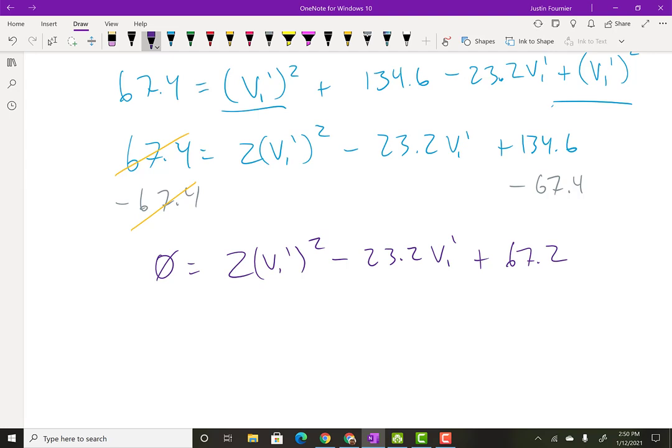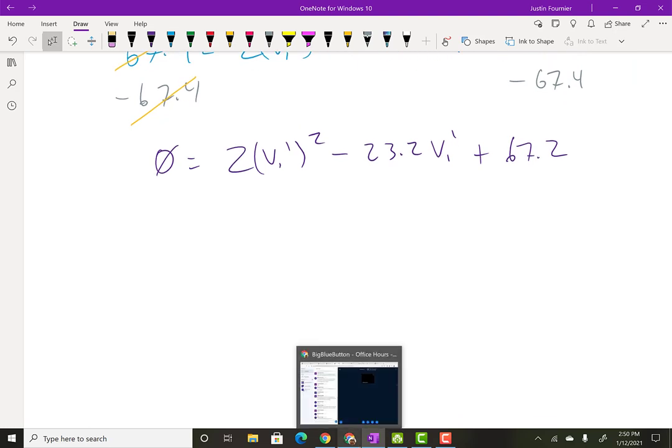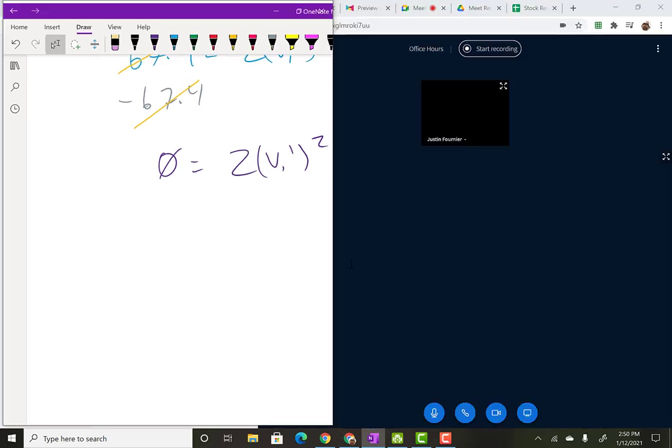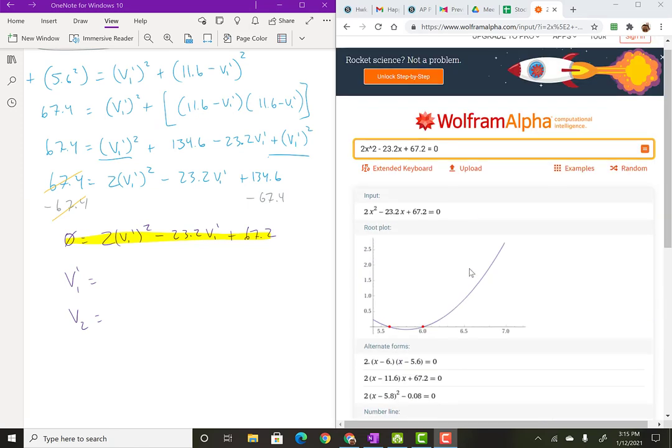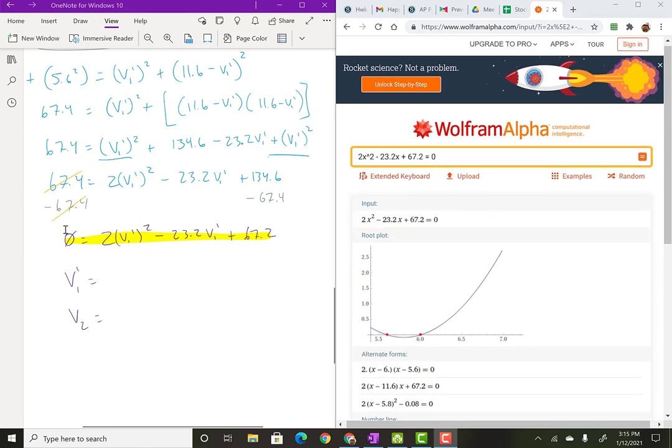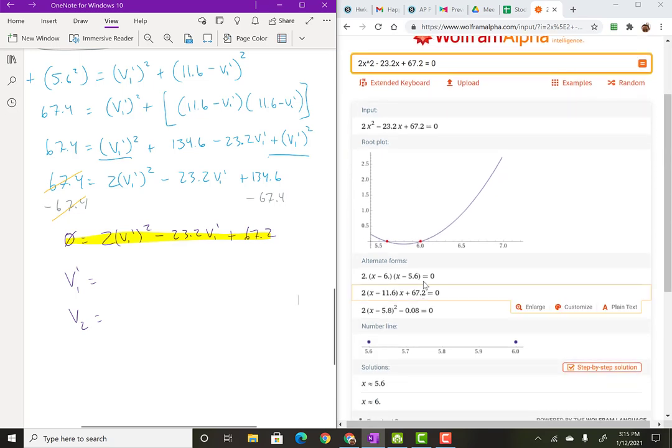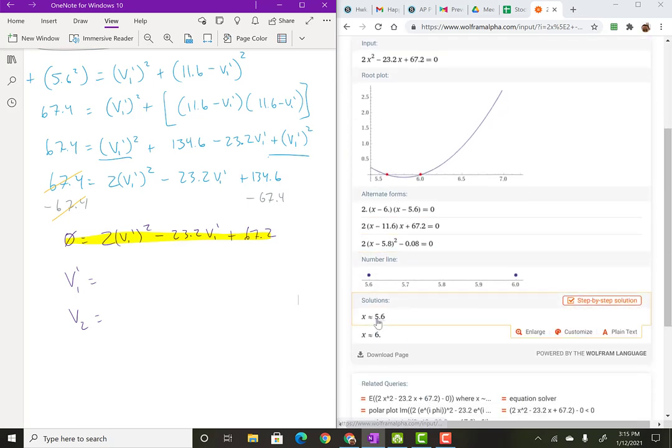So let's see 11.6 times 11.6. So this is 67.4 equals V1 prime squared plus 11.6 squared. That's 134.6, minus 23.2 V1 prime plus V1 prime squared. Combining some of these, this is going to be 67.4 equals 2V1 prime squared minus 23.2 V1 prime plus 134.6. As you can see, I got a quadratic. So I'm going to make everything zero. So I'm going to subtract both sides by 67.4.